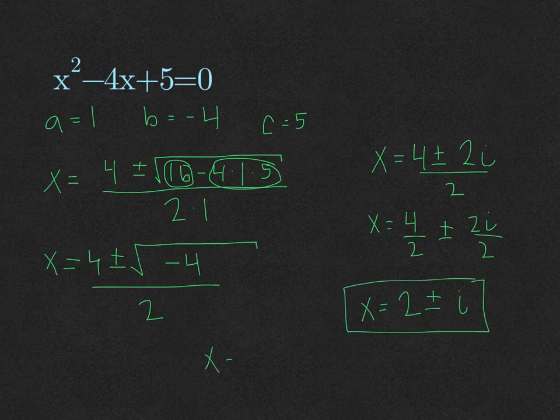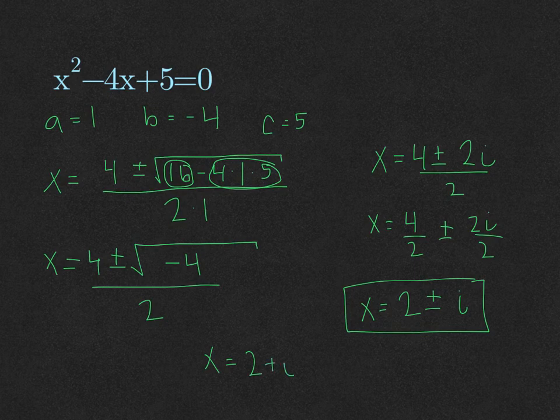What it means is that x equals 2 plus i, and 2 minus i.